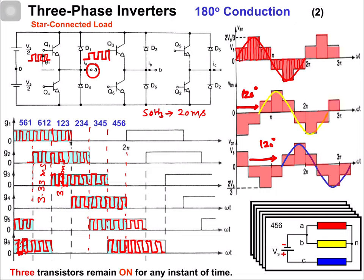Consider a high frequency signal. In a zoomed version, for every cycle there is a duty cycle — let's suppose it is 50 percent.